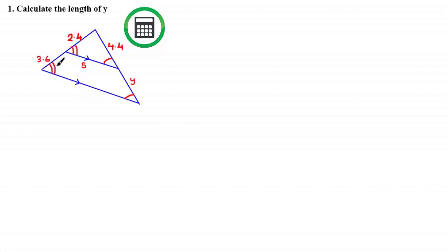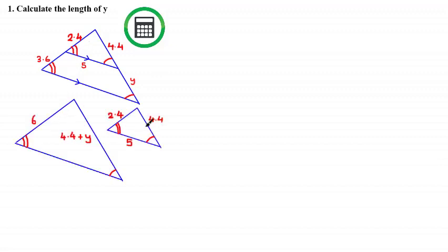In the previous tutorial we discussed that drawing the shapes again and separating them can be very useful to help you see the similarity more clearly. Here we have the smaller triangle within the larger triangle, and here we have the larger triangle where this side is 3.6 plus 2.4 which gives us 6, and this side is 4.4 plus Y, giving us 4.4 plus Y.